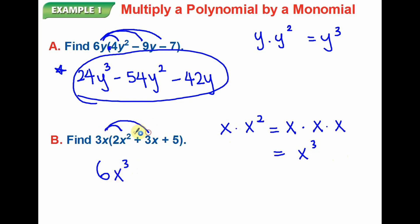3x times 3x will result 3 times 3, which is 9. x times x, I will get x squared. The last term, 3x times 5, I will get 3 times 5 is 15, and then x stays by itself. This will be my answer of part B.